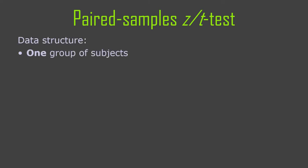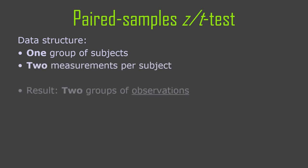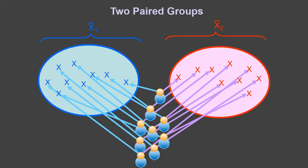So when do you use this? You use this when you have paired data — you have to look at the structure of the data. You need to have one group of subjects and two measurements per subject. On the result, you'll have two groups of observations, but only one group of cases or participants or subjects. That's paired data. The setup: paired samples, one group of participants, two observations per participant.